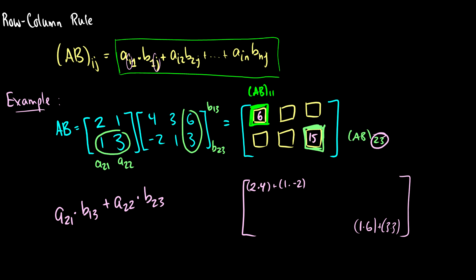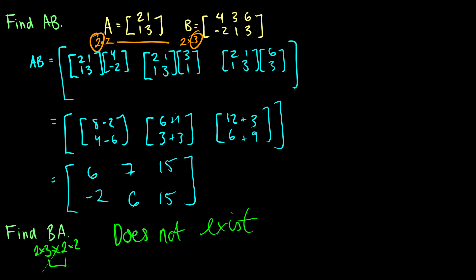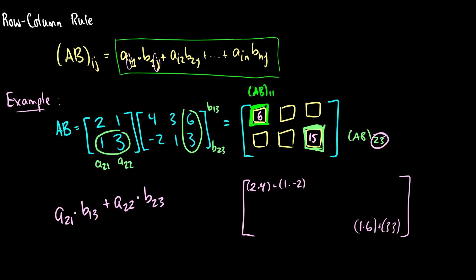We can do this for every single entry. This multiplication is the same as I showed before — we get 6 and 15, exactly the same outcome, which means this method works. We've proven it's consistent by doing the same example twice with two different methods. I challenge you to figure out the rest of the positions using the row-column rule, writing out the formula as you go.